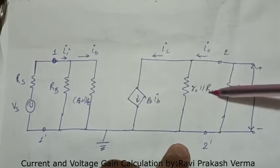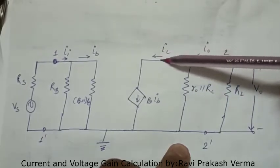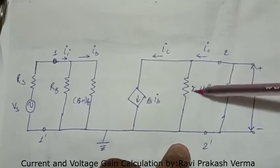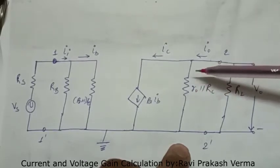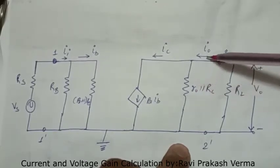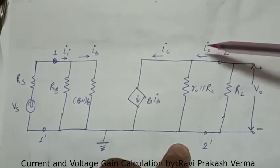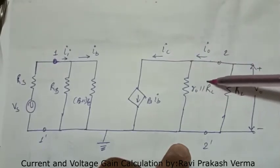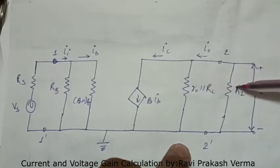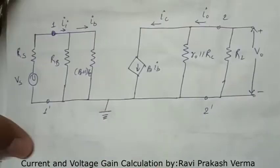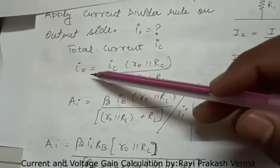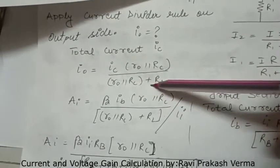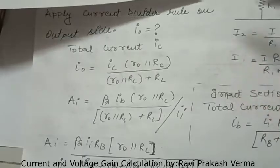Some current is passing through R naught parallel RC, and the total current is IC. So IC is the sum of I naught and the current passing through R naught parallel RC. According to the current divider rule, I naught equals IC times R naught parallel RC, divided by R naught parallel RC plus RL.